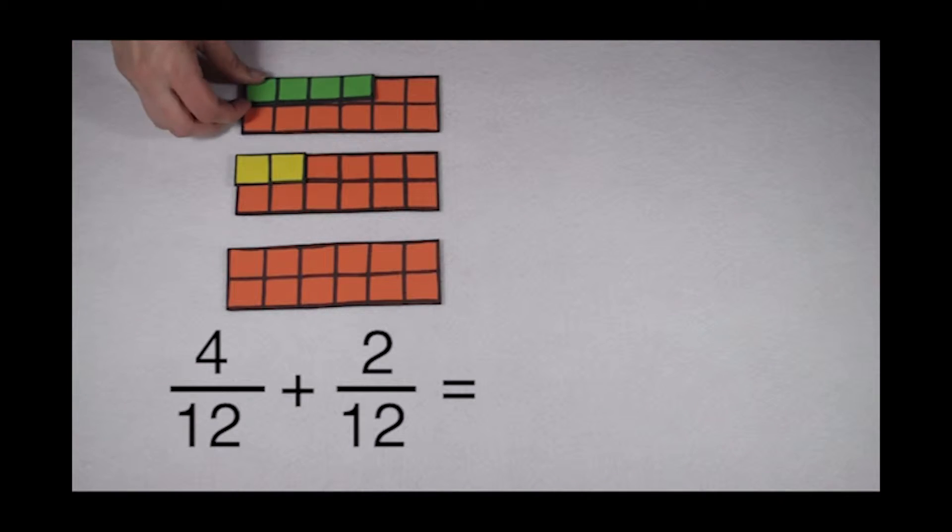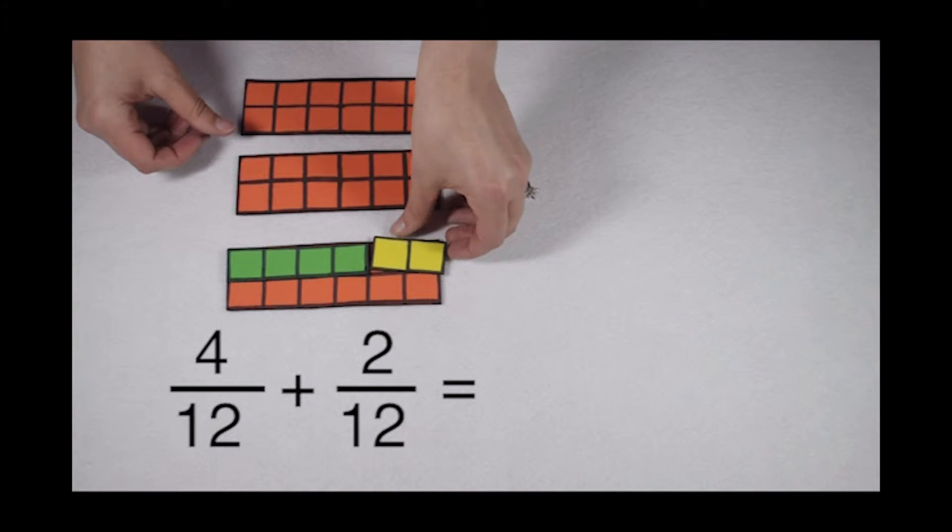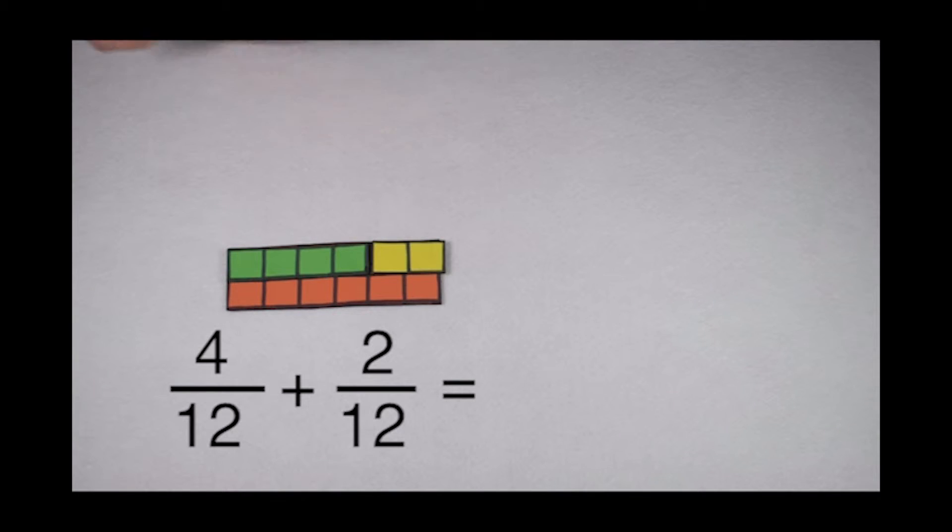Since my common denominator is 12, I can go ahead and just add my numerator of 4 to my numerator of 2 to give me a total of 6/12.